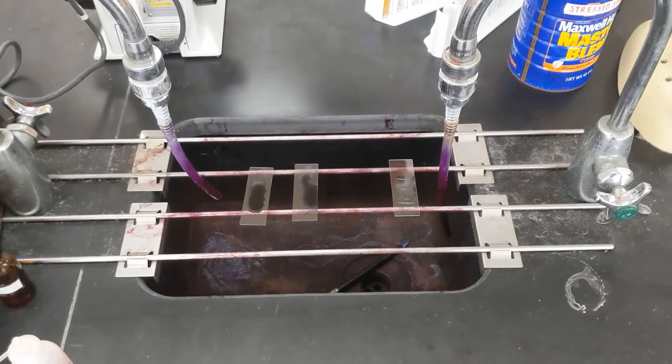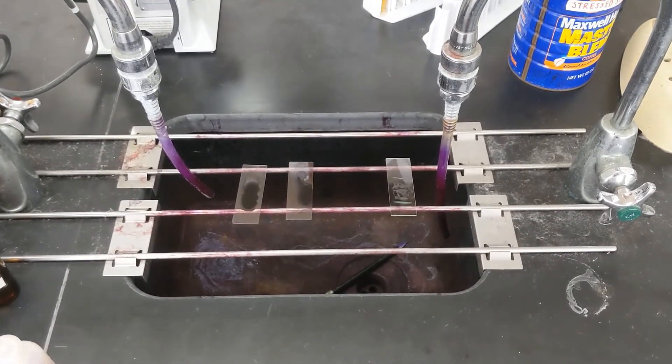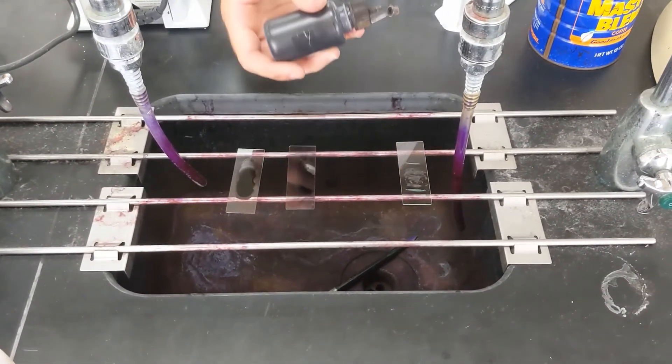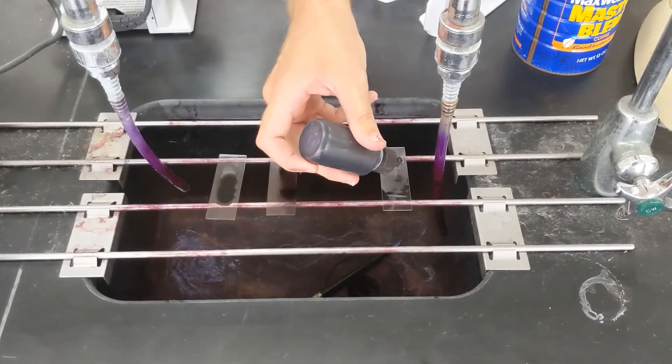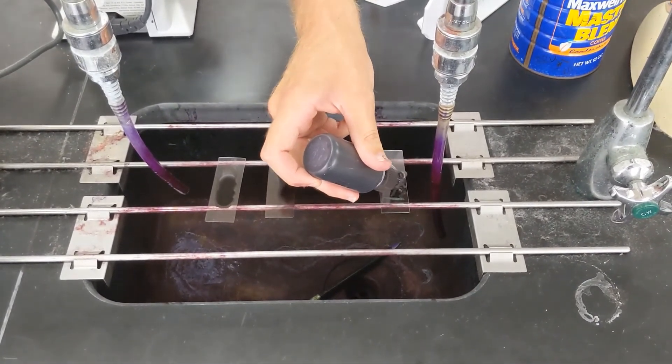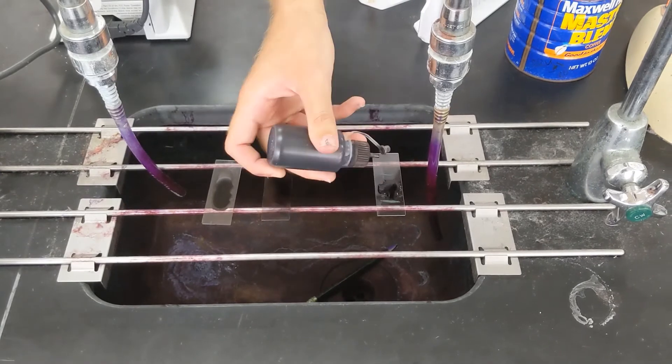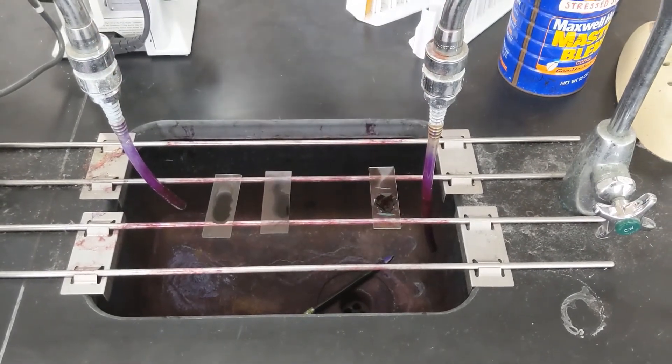So then after we heat fix the slide, we'll add our methylene blue, which is our direct stain. What you're going to want to do is cover the sample area with this stain and then let it stand for 30 seconds to a minute.